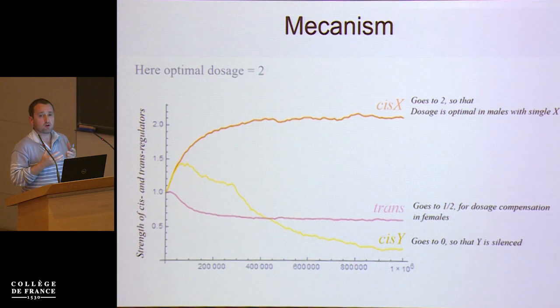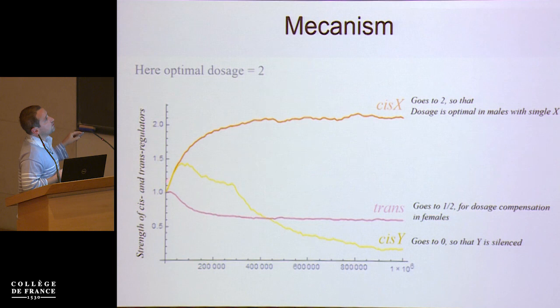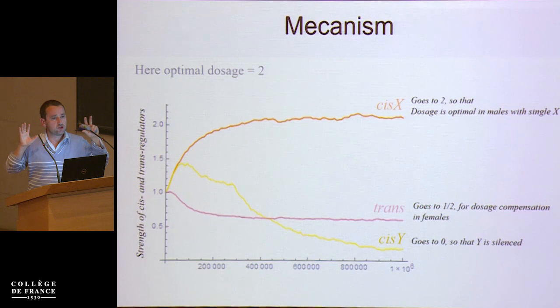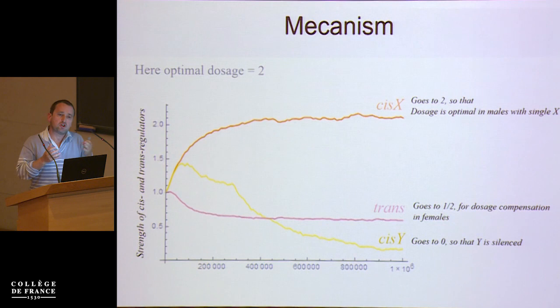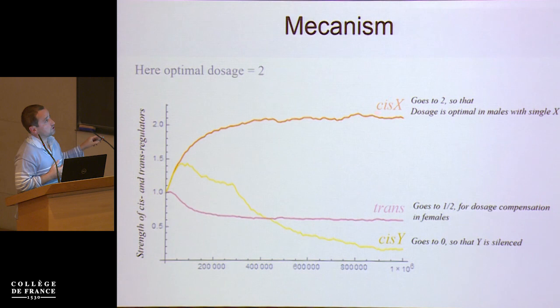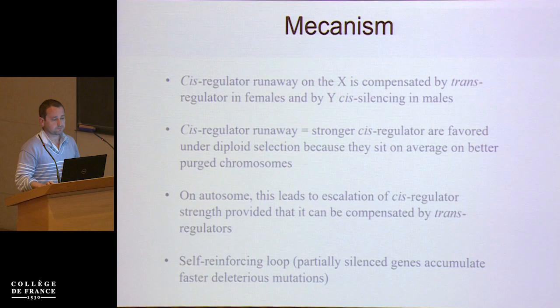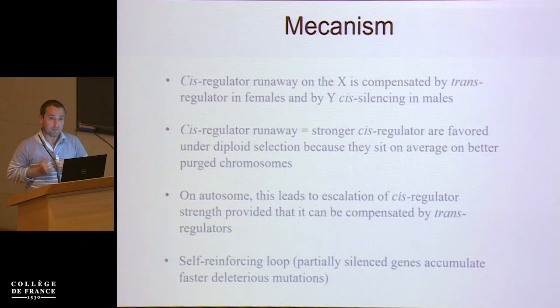When you look more specifically at what's going on with the traits in the model: the cis regulator on the X starts at one and goes to two — you've got optimal dosage in males because the male has a single X, so the optimal dosage becomes two in males. The cis regulator on the Y goes to zero because it becomes silenced. And the trans-acting effect in females is the actual dosage compensation: it goes to one half, as in C. elegans, where you get a reduction of expression to half to restore the correct dosage, because the regulator on the X has gone stronger.